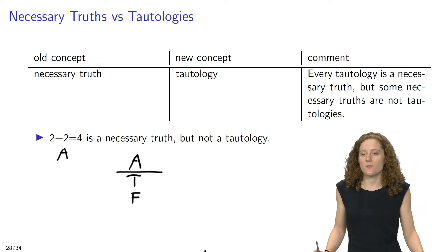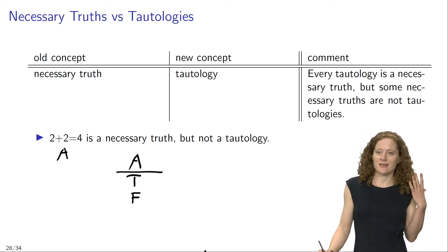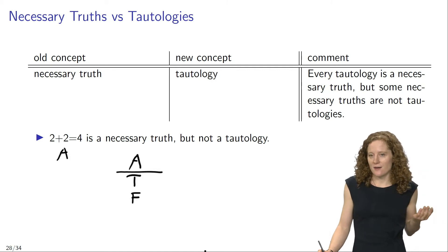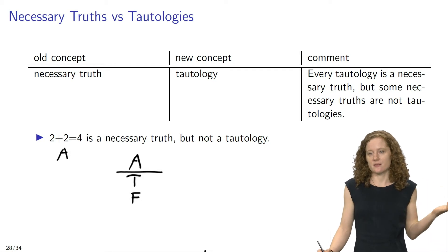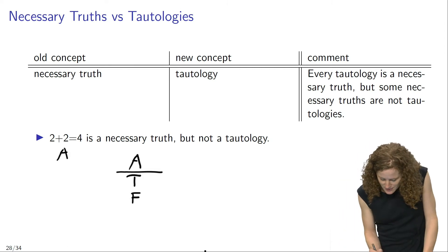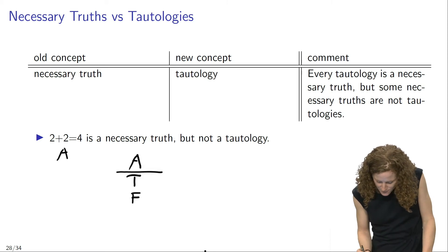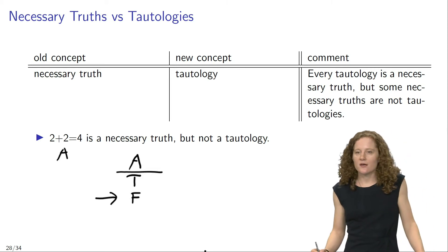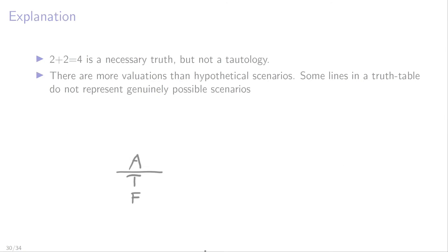Our truth table for the sentence letter A contains one row in which this sentence is true, and one row in which this sentence is false. Since this truth table contains a row where the sentence is represented as false, it follows that this sentence is not a tautology. So some sentences are necessary truths, but not tautologies.